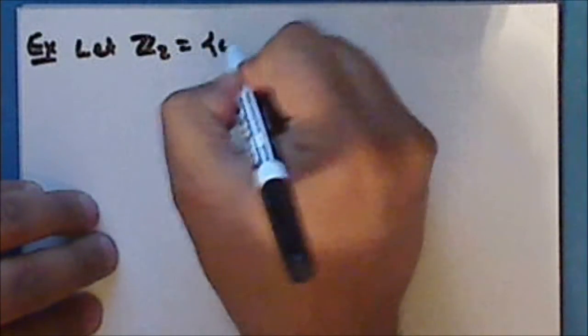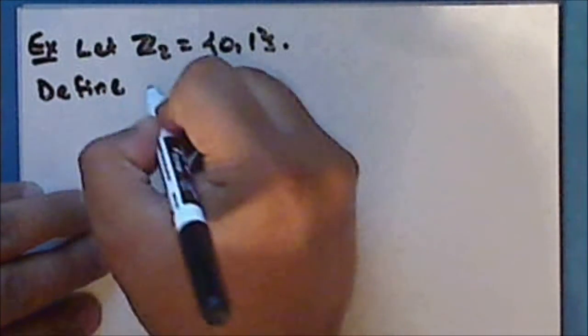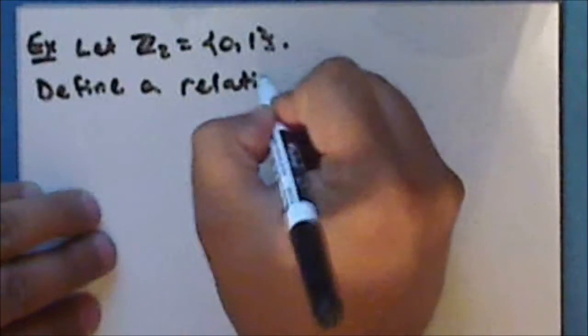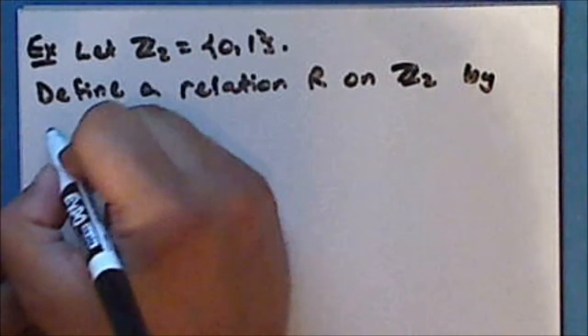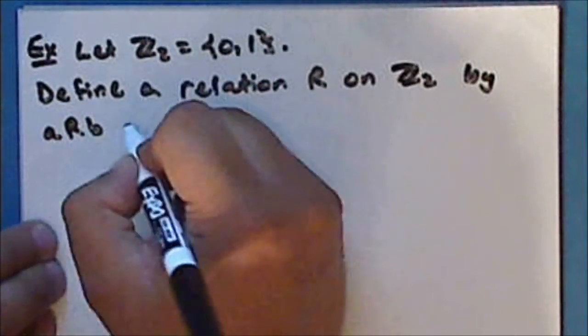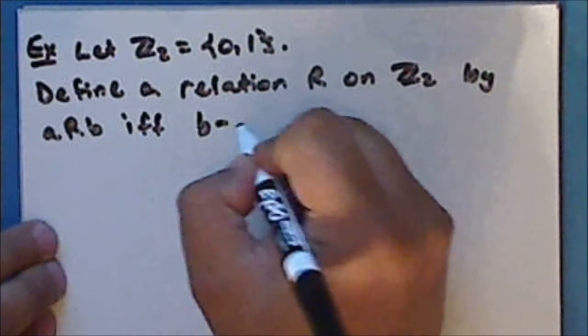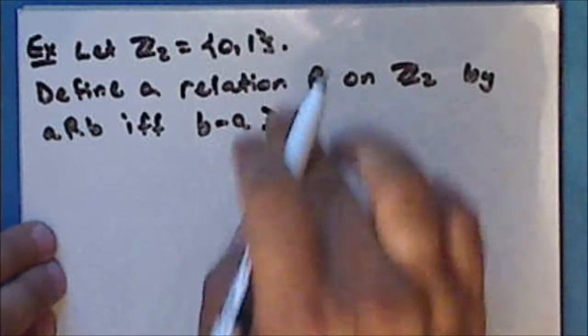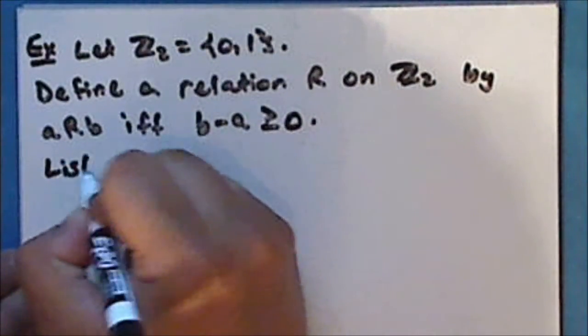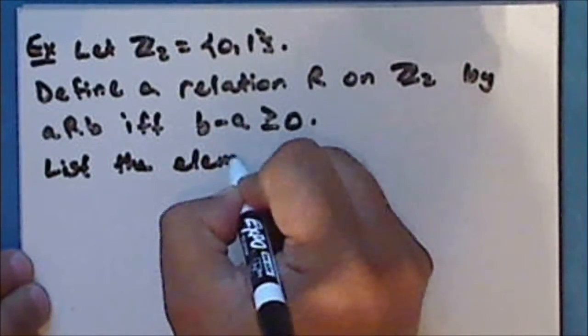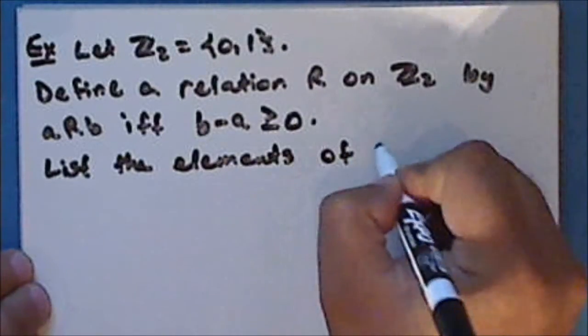As an exercise, let Z sub 2 be the set of integers modulo 2. Define a relation R on Z₂ by: a is related to b if and only if b minus a is greater than or equal to 0. List the elements of the relation R.